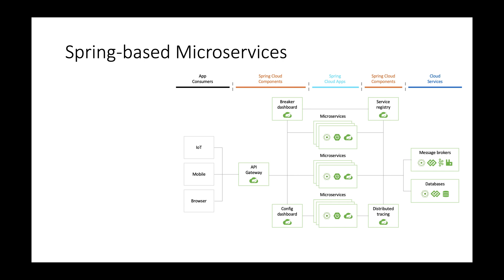Let's look at a typical layout of Spring components for deploying Spring-based microservices. The center here represents business apps or microservices interacting with data, messaging, cache, and directories on your right. The business app consumers on your left are interacting with your business apps in the center. The Spring Cloud middleware components are laid around business apps.